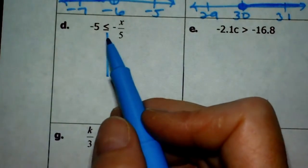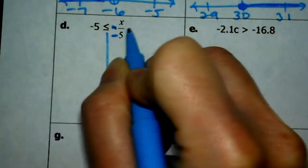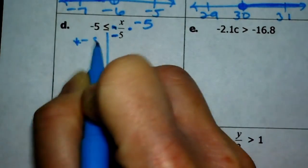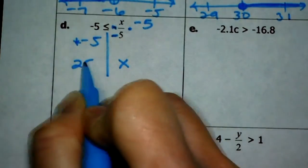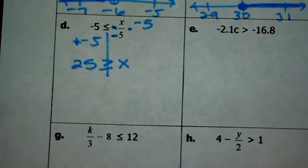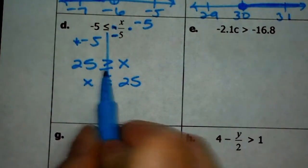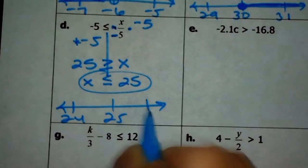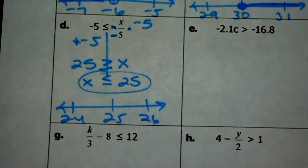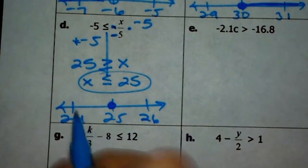Here I have negative 5 is less than or equal to negative x over 5. When solving division equations, put the negative with the bottom, and then we can multiply by that negative to get rid of it. So we multiply both sides by negative 5. Negative 5 times negative 5 is 25. Originally it was opened up to the x, now it needs to point at the x because we multiplied by a negative. Rewriting with the variable on the left: x is less than or equal to 25. 25 is in the center, with 24 and 26. Less than or equal to means closed, and less means left.